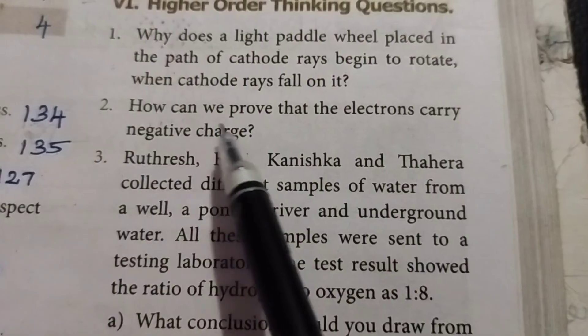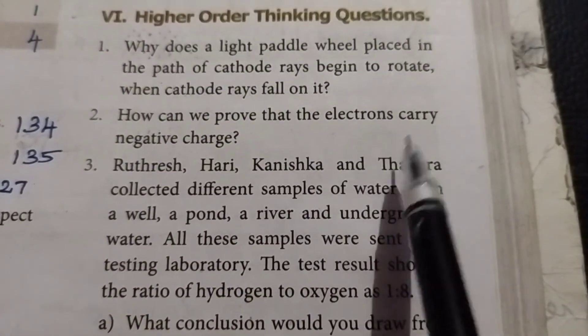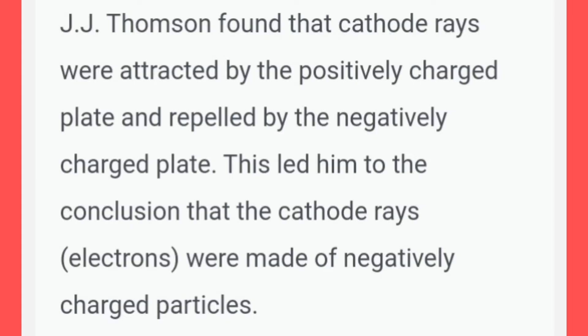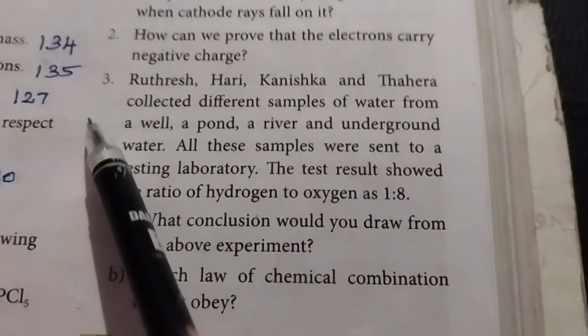Second question: how can we prove that the electrons carry negative charge? Answer: J.J. Thompson found that cathode rays were attracted by the positively charged plate and repelled by the negatively charged plate. This led him to the conclusion that the cathode rays, electrons, were made of negatively charged particles.